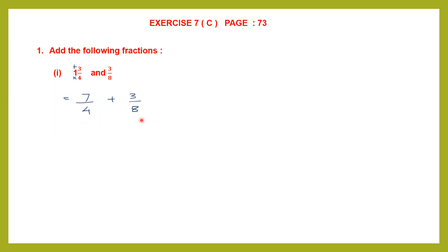As you can see the denominators are different. That means these are unlike fractions. So if we have unlike fractions we have to make the denominators the same, and we can do that by finding the LCM of the denominators. So let's take the denominators 4 and 8 and find the LCM.